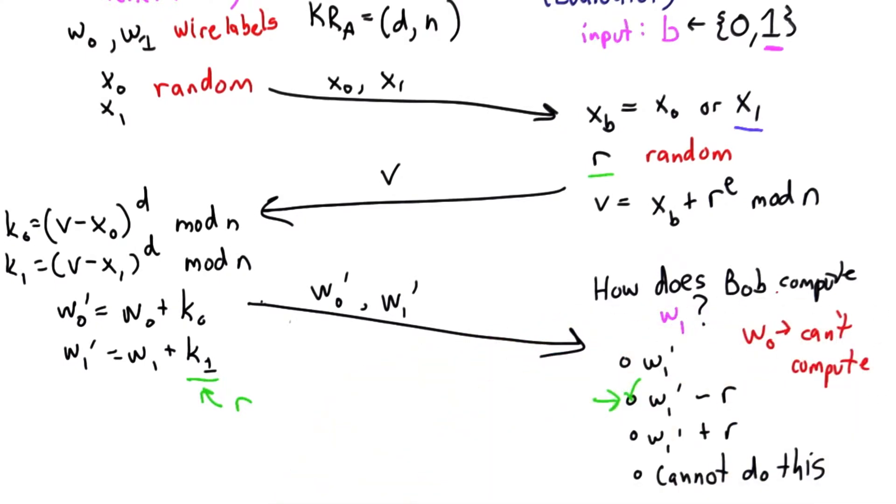Bob cannot compute w0, though, because the value used for k0 is meaningless and unknown to Bob.